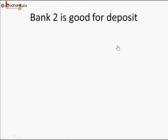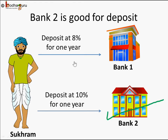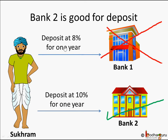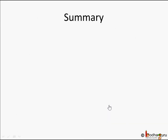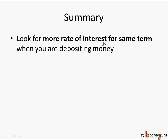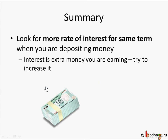So which one should Sukram choose? Of course, the bank giving him more money back — so Bank 2 is good for the deposit. He puts in 10,000 rupees and gets 11,000 back from Bank 2, whereas Bank 1 gives only 10,800 back — only 800 rupees extra compared to 1,000 rupees extra. So you should choose the one giving you more. Remember: when depositing, look for the bank giving you a higher rate of interest for the same terms, so that you earn more money.